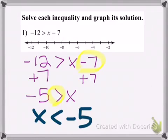So to plot it on the number line, I will go to negative 5, which is right between negative 4 and negative 6, and it does not say equal to, so I'm going to have an open circle. And it says less than, so I will shade to the left.